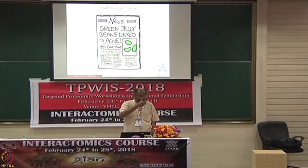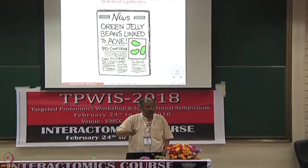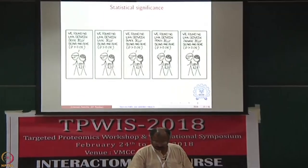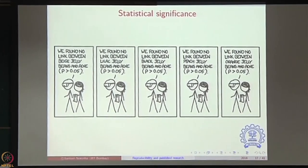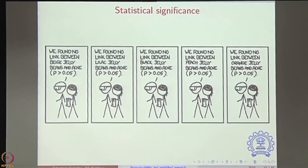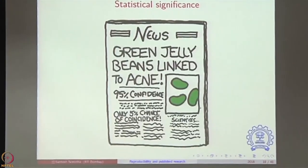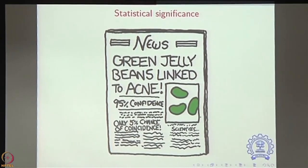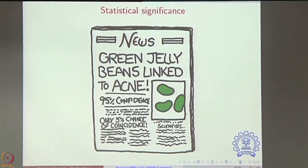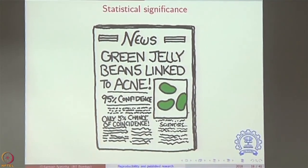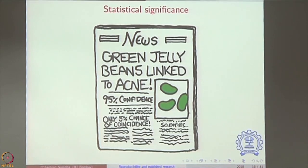Now, if you are in the publishing game, it is very important that you notice that publications do not allow you to publish negative results. So the only thing you can publish is this particular result. There is pressure on you to find that needle in a haystack as a positive result and publish it — and that is the nature of this confirmation bias and p-hacking, which pushes you into now focusing entirely your research on this particular candidate, the green candidate, as if it were the only relevant candidate.